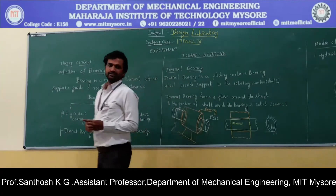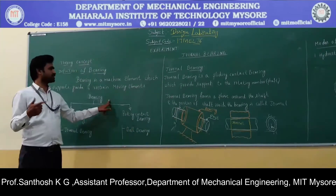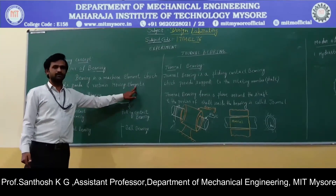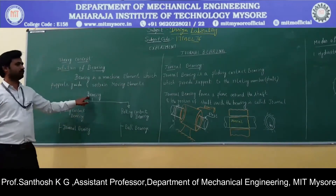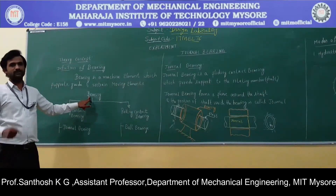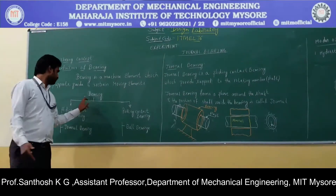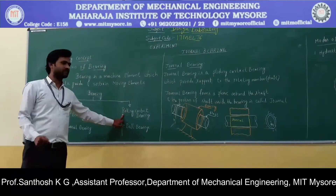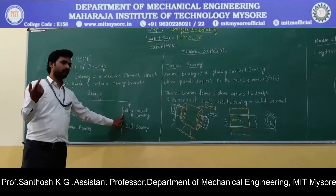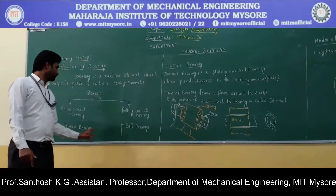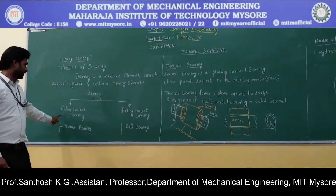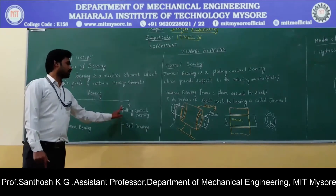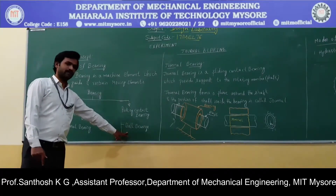Since the bearing supports the moving elements based on the type of motion exhibited by the moving elements, we are going to classify bearings into two types. One is called a sliding contact bearing and the second one is called a rolling contact bearing. One example of a sliding contact bearing is a journal bearing and one example of a rolling contact bearing is a ball bearing.